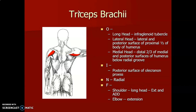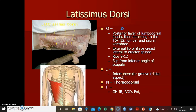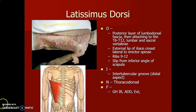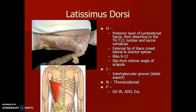Latissimus dorsi originates from the posterior layer of the thoracolumbar fascia, attaching to T6 to T12 up to the lumbar and sacral vertebrae, and also the external lip of the iliac crest, ribs 9 to 12, and the inferior angle of the scapula. It inserts in the intertubercular groove, innervated by the thoracodorsal nerve. It is called the 'lady between two majors,' as it lies in the intertubercular groove between pec major on the lateral lip and teres major on the medial lip. It causes internal rotation, adduction, and extension at the glenohumeral joint.